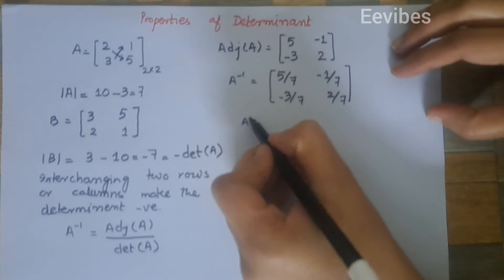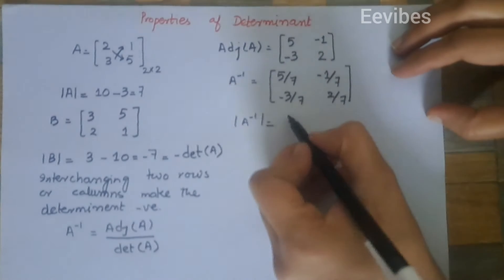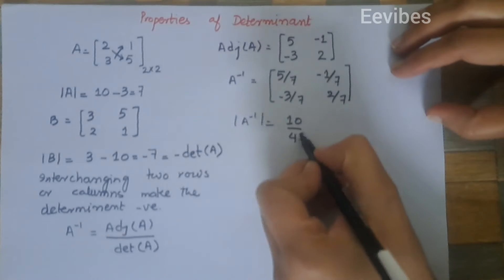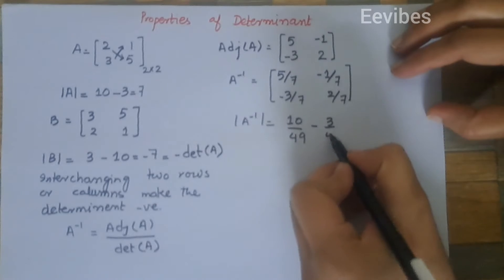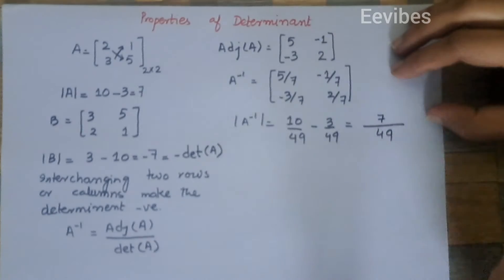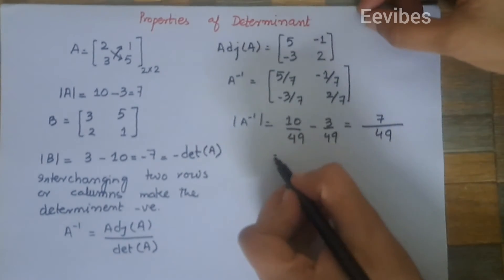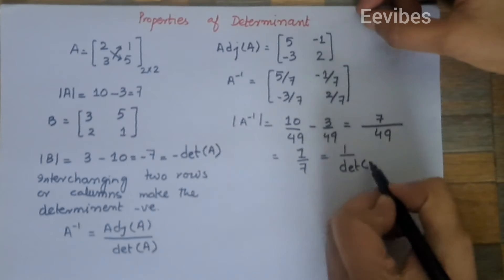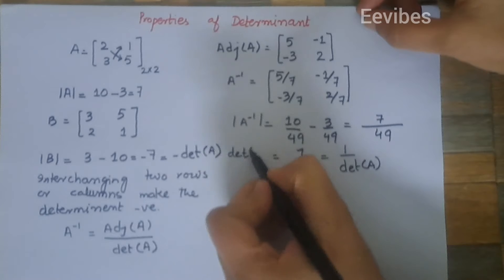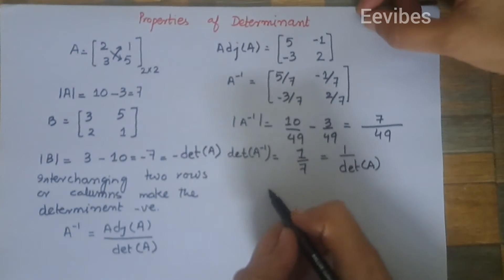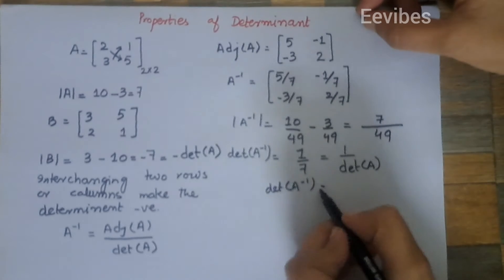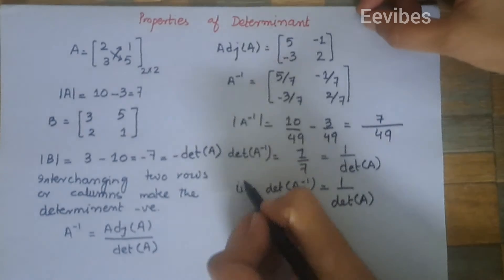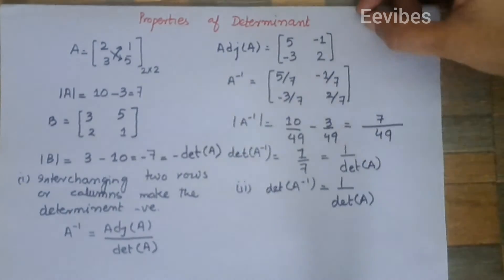Now let's find the determinant of the inverse of A. Computing (5/7)(2/7) minus (−1/7)(−3/7) gives ten over forty-nine minus three over forty-nine. On simplification we get seven over forty-nine, which equals one over seven. This is actually equal to one over the determinant of A. So we conclude the second property: the determinant of A inverse equals one over the determinant of A.